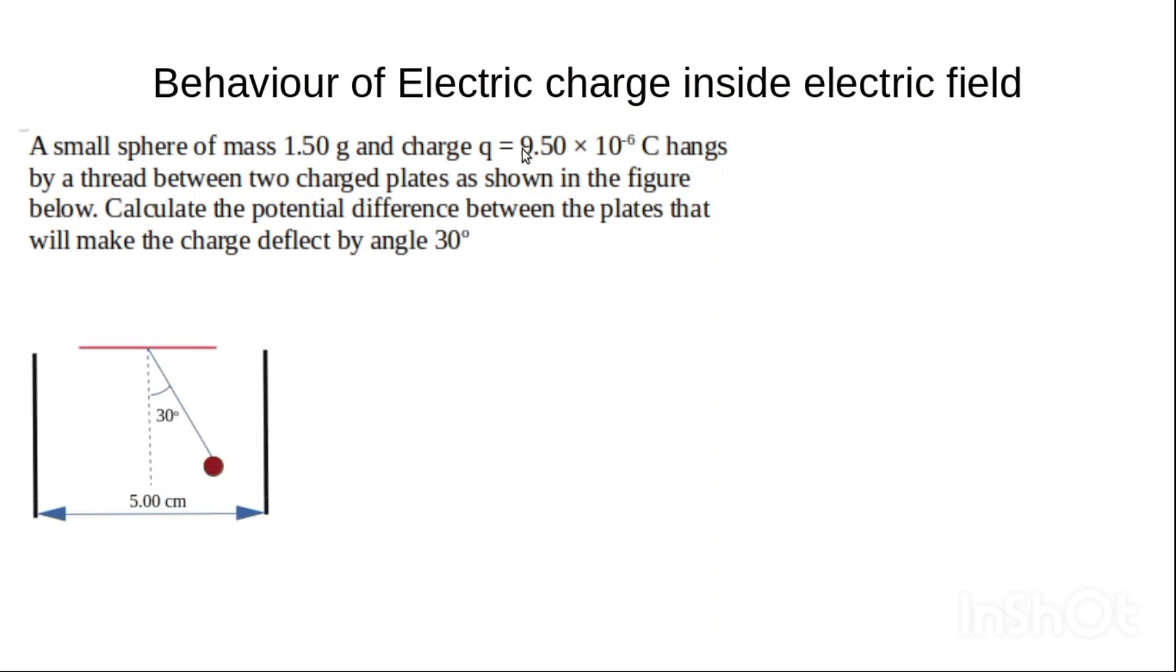So this is the diagram for the system. We have two charged plates. Because it's a positive charge and it is drawn towards this direction, it means this side is a negative charge plate and this side is a positive charge plate. When we bring a positive and negative charge plate close together, an electric field will be established between them. The electric field lines will go from this point to this point, from here to this point.